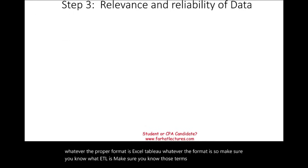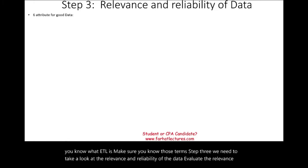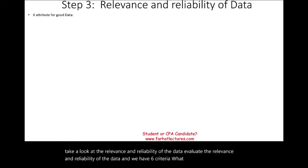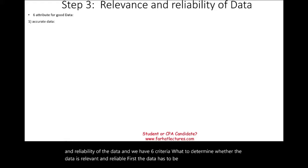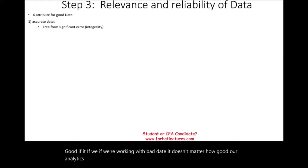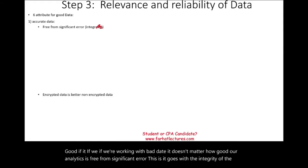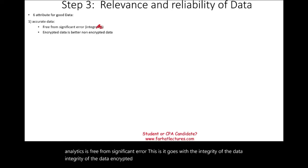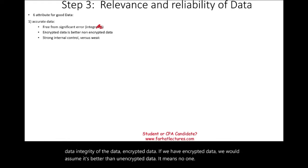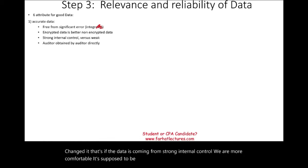Step three: evaluate the relevance and reliability of the data. There are six criteria. First, the data must be accurate — if we work with bad data, it doesn't matter how good our analytics is. Accuracy relates to the integrity of the data. Encrypted data is preferable because it indicates no one changed it. Data coming from strong internal controls is more reliable than data from weak controls. Data extracted by the auditor themselves is more accurate than data provided by someone else, and written data is better than oral data.